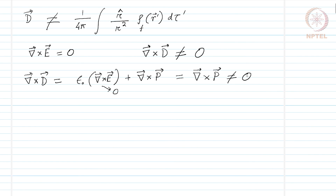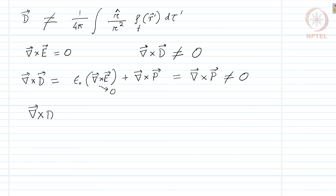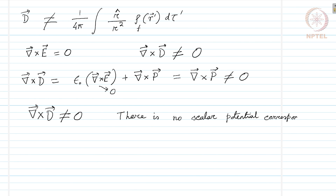The curl of P is not in general zero. Polarization is a property of the material — it will depend on what kind of material we have at hand; its curl may be zero or non-zero. Therefore, we cannot express the displacement vector by integrating over the free charge density multiplied by r-hat over r squared, as we did for the electrostatic field using Coulomb's law. Since the curl of the displacement vector is not zero, there exists no scalar potential for D. This is something very important to remember.